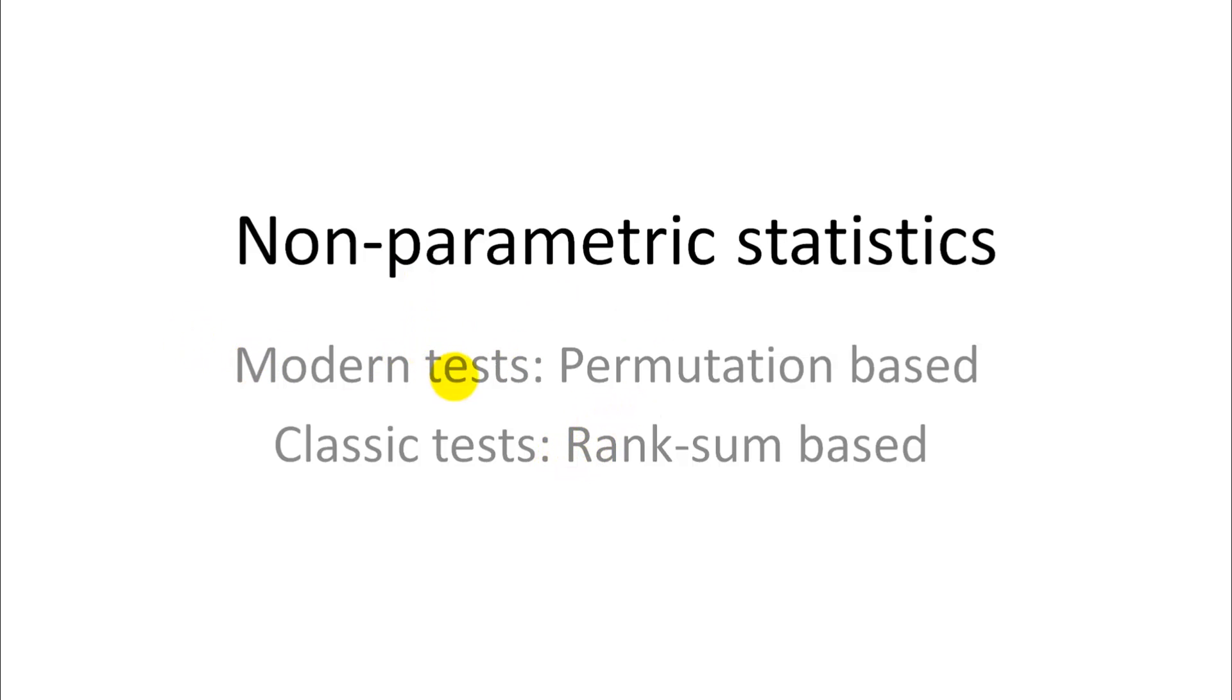The modern tests are equal to the parametric statistics, but the classic tests are compromised. They are based on ranking observations and you lose the magnitude information. So that's why they lose power in detecting statistical differences. But they're actually still fun. It's nice to understand them and people are still using them, so it's just good to know how they work.